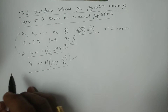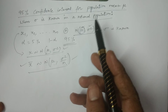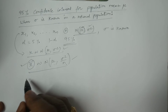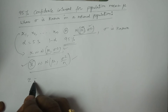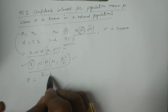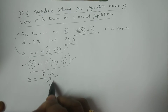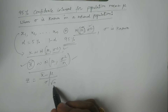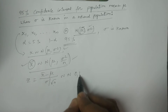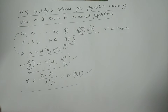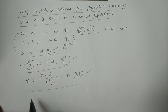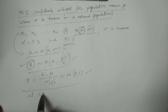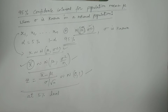Now, if you consider the standard normal variate for x̄ — because we are calculating for the mean — the standard normal variate is Z = (x̄ − mu) / (sigma / root n). Since variance is sigma square by n, the standard deviation is sigma by root n. This Z follows a normal distribution with mean 0 and variance 1, known as the standard normal variate for x̄.